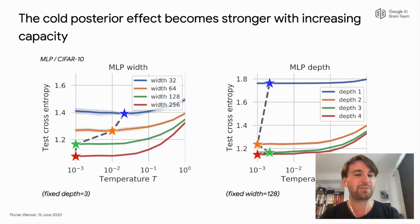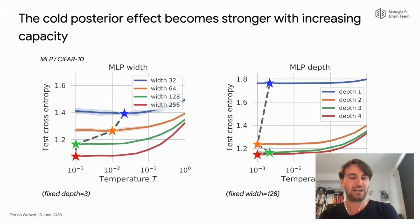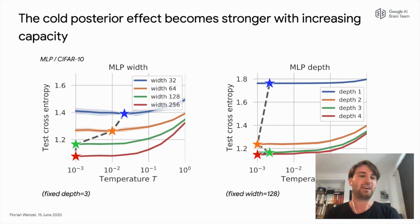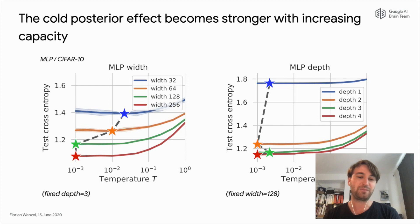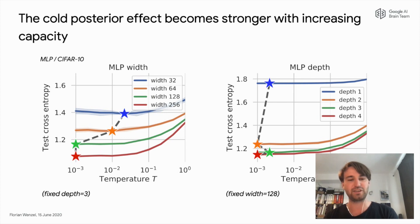We also observe that the cold posterior effect becomes stronger with increasing model capacity. For an MLP on CIFAR-10 with fixed depth of three hidden layers, as we increase the width — the number of neurons per layer — the optimal temperature becomes lower. We see a similar tendency with depth: fixing the width to 128, the deeper the model becomes, the more pronounced the cold posterior effect.